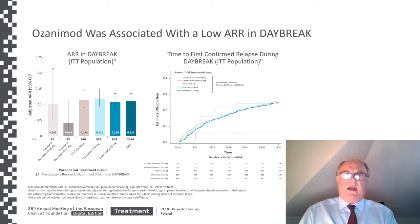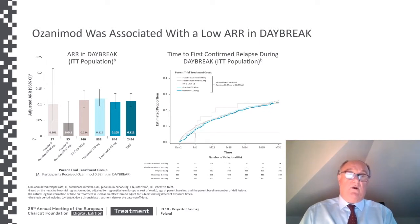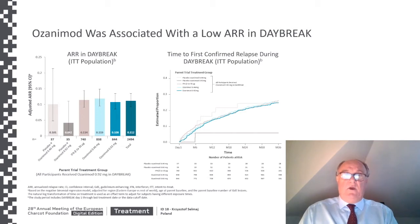Here we have data on annual relapse rate in Daybreak. On the left side panel, we have the annual relapse rate in the parent trial treatment groups. Regardless of the previous treatment with interferon beta, low dose or high dose of Ozanimod, or placebo, the annual relapse rate in Daybreak was very low across all individual groups and was at the level of 0.1. On the right side, you have the data on time to first confirmed relapse during Daybreak, which was similarly consistent between all parent trial treatment groups.